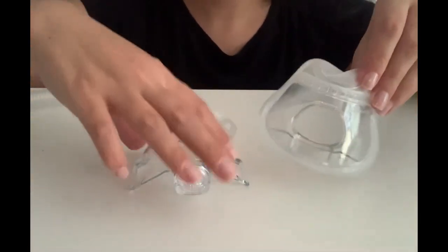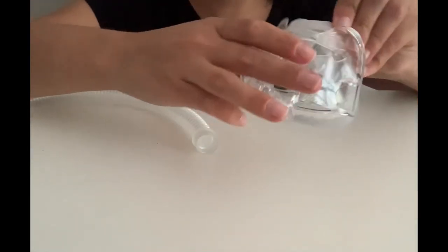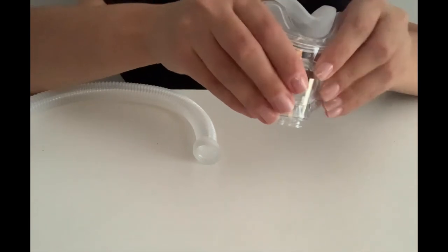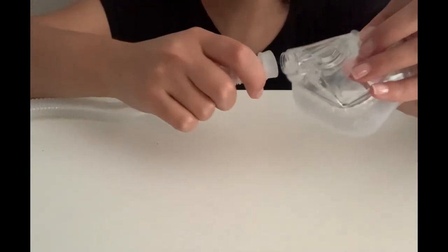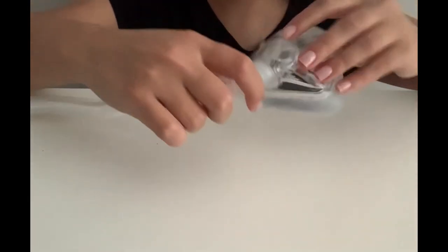To reassemble, first grab the cushion and frame and reattach them to each other by pushing them in. Put your tube back in the frame by pushing it in and you'll hear a little click.